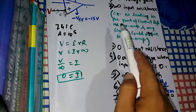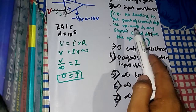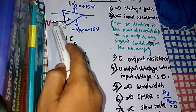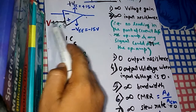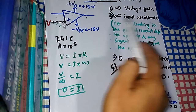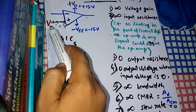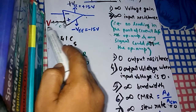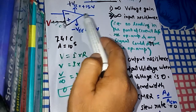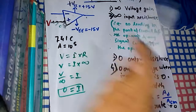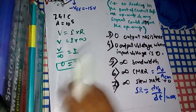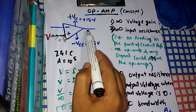To summarize infinite input resistance: no loading in the part of the circuit before the op-amp means current is not produced by the voltage. Because of infinite input resistance, even a very weak voltage will still produce an output voltage. This is also because the input resistance is infinite.